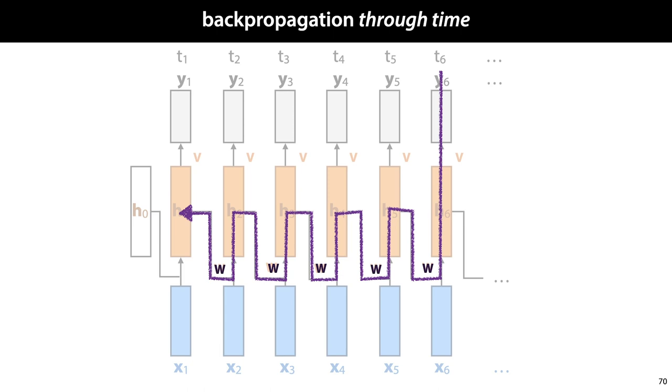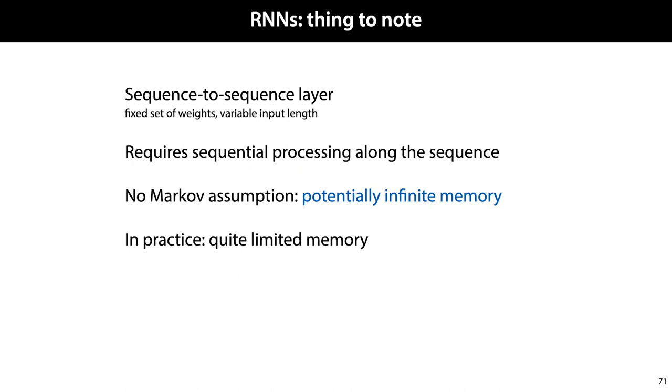So that's recurrent neural networks. Note that in this unrolled view, we can easily think of recurrent neural networks as sequence to sequence layers. They take in an input sequence and they produce an output sequence. And the set of weights or parameters doesn't change with the length of the input. They are slower than convolutional neural networks because we cannot process all the tokens in the output sequence in parallel. We need to finish computing the first one before we can start on the second one because of the recurrent connection. What we get for paying this price of slower computation is that there is no Markov assumption of any kind. We have a potentially infinite memory.